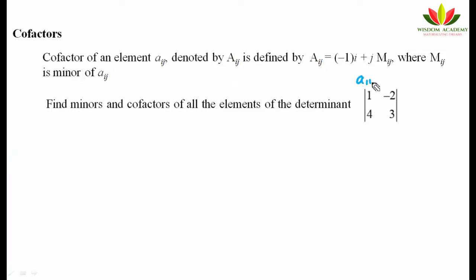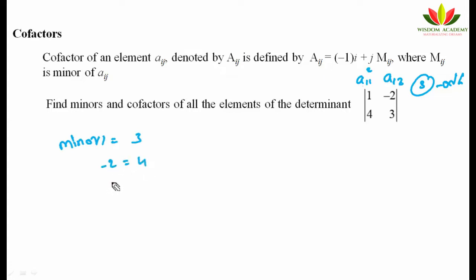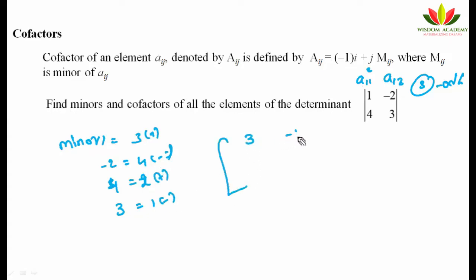The cofactor is found by checking the position: for a11, 1+1=2 (even), so no sign change. For a12, 1+2=3 (odd), so the sign of the minor is changed. Finding minors: minor of element 1 is 3, minor of -2 is 4, minor of 3 is 1, minor of 4 is -2, minor of 3 is 1. Applying the sign pattern (+,-,+,-), the cofactor matrix becomes [3, -4; 2, -1].